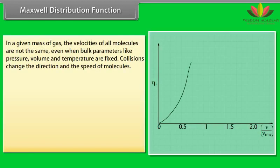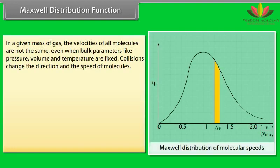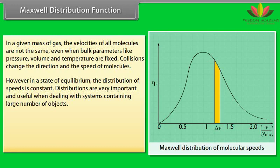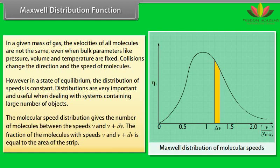Maxwell distribution function. In a given mass of gas, the velocities of all molecules are not the same even when bulk parameters like pressure, volume and temperature are fixed. Collisions change the direction and the speed of molecules. However, in a state of equilibrium, the distribution of speed is constant. Distributions are very important and useful when dealing with systems containing large number of objects. The molecular speed distribution gives the number of molecules between the speeds V and V plus DV. The fraction of the molecules with speeds V and V plus DV is equal to the area of the strip.